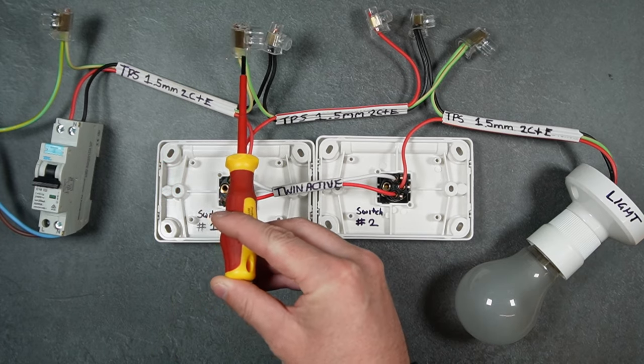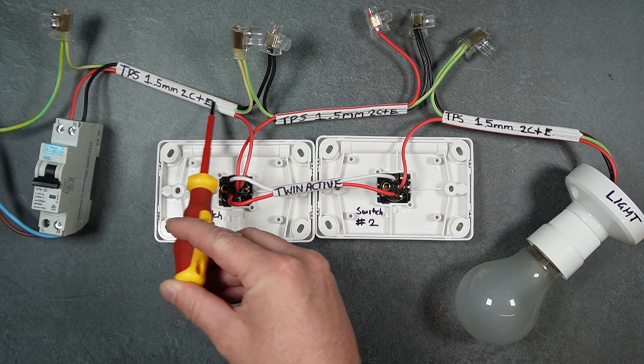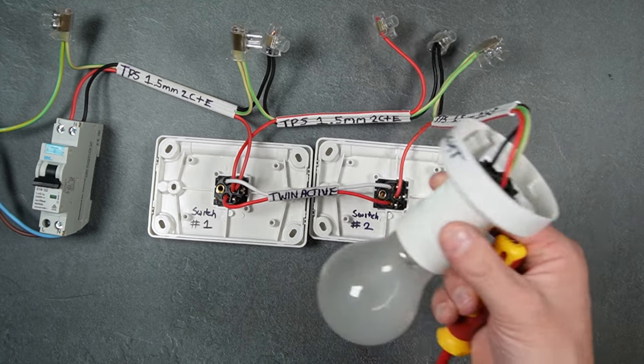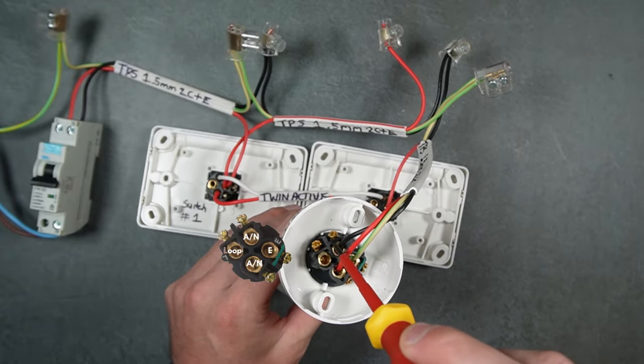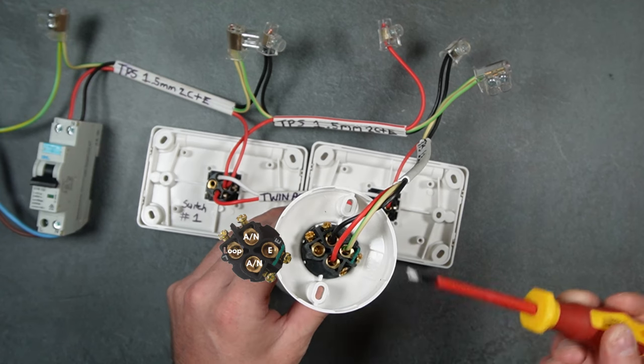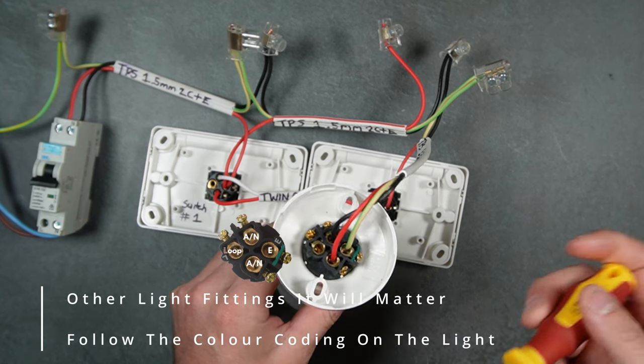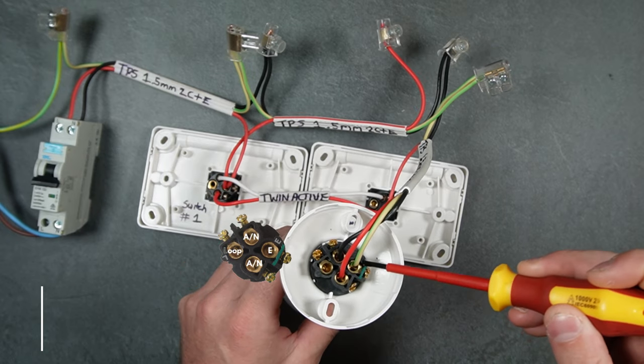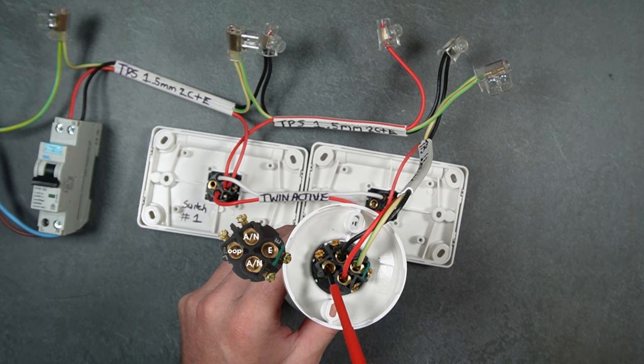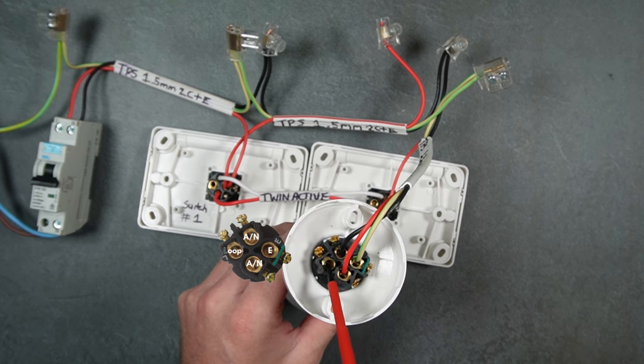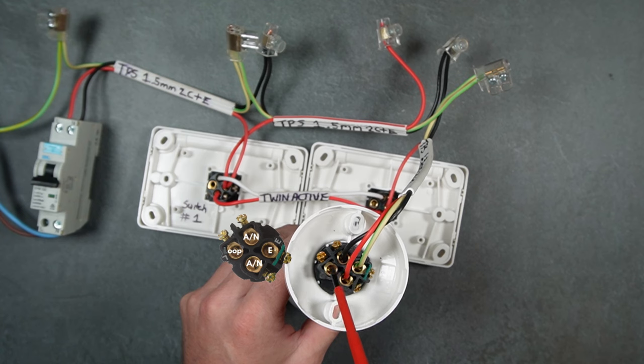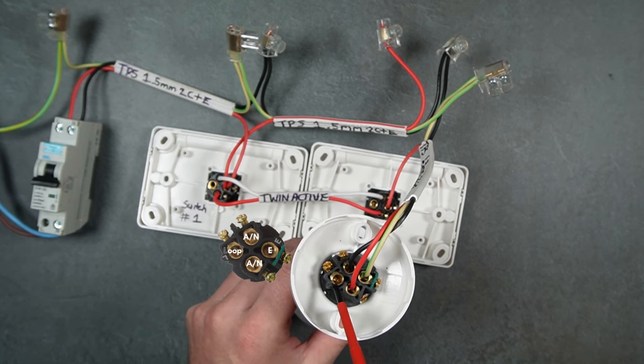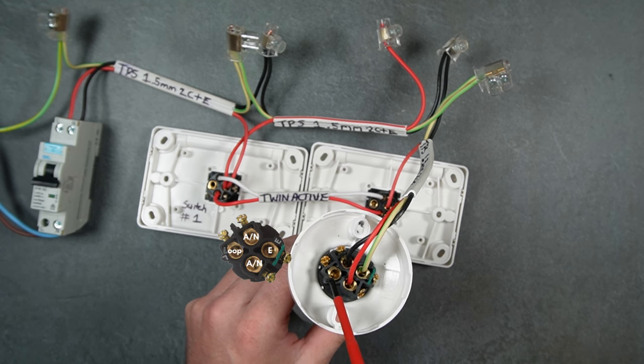These are the terminals on the light - active and neutral. It doesn't matter which one you use for active or neutral on a batten holder. Your earth is clearly labeled. And the loop-in terminal is just a dead terminal, and this would be used just to join cables - acts like a connector, pretty much - and it would be used in the looping at the light method.